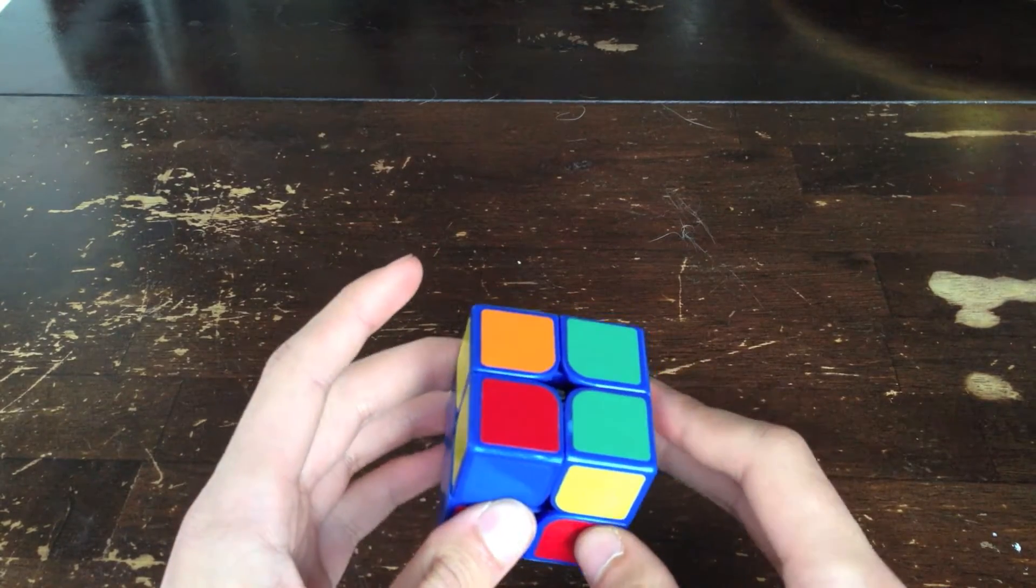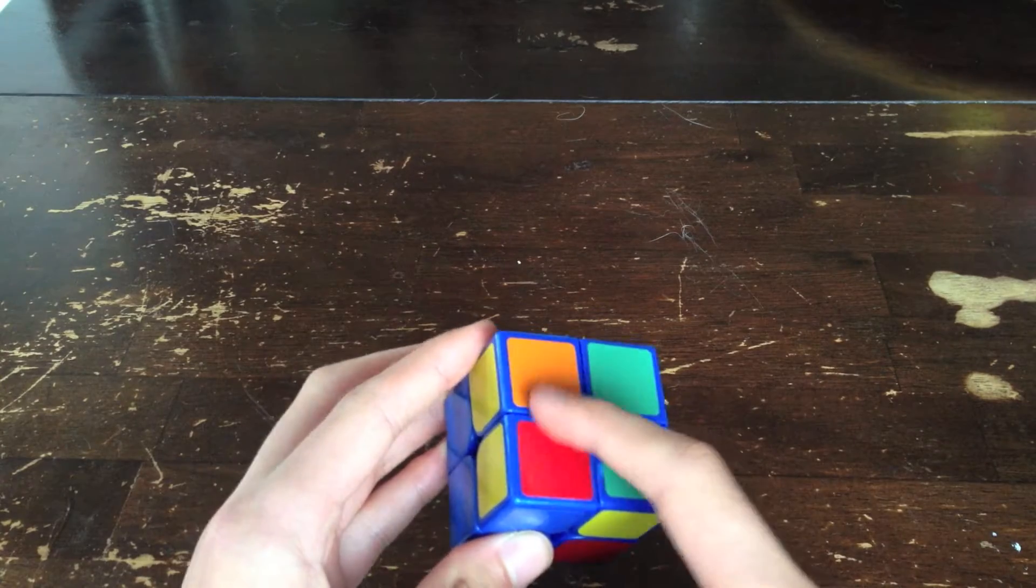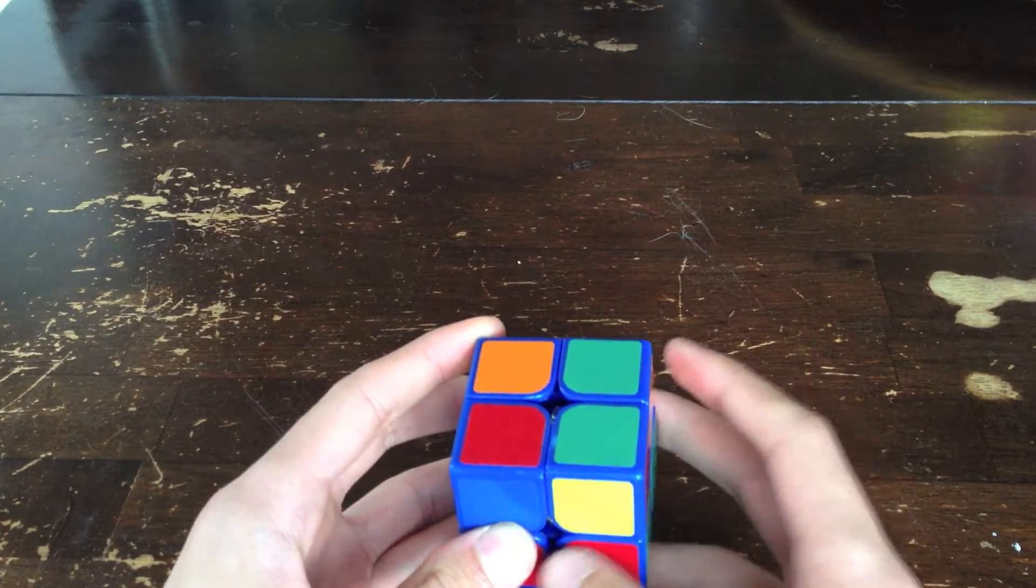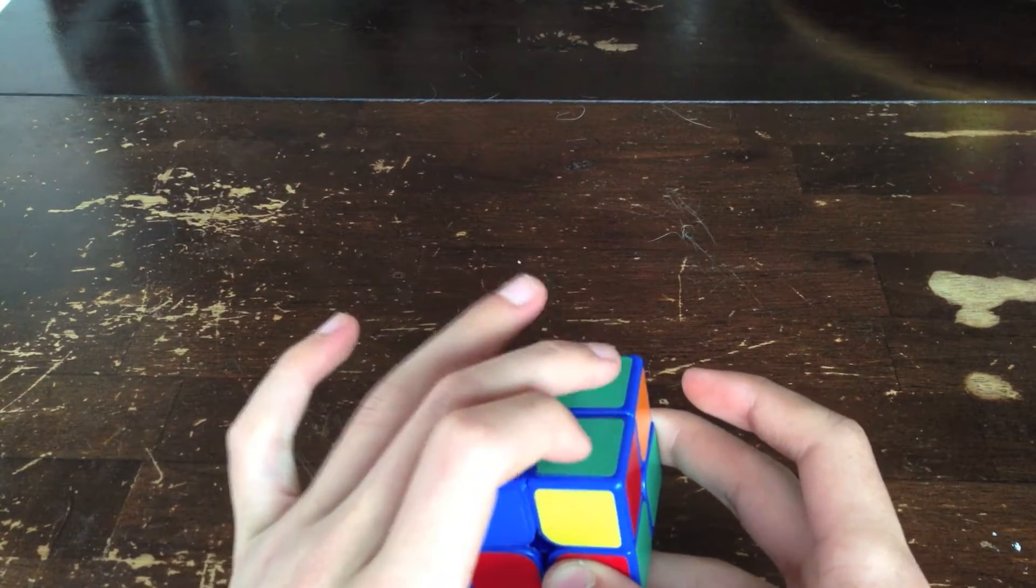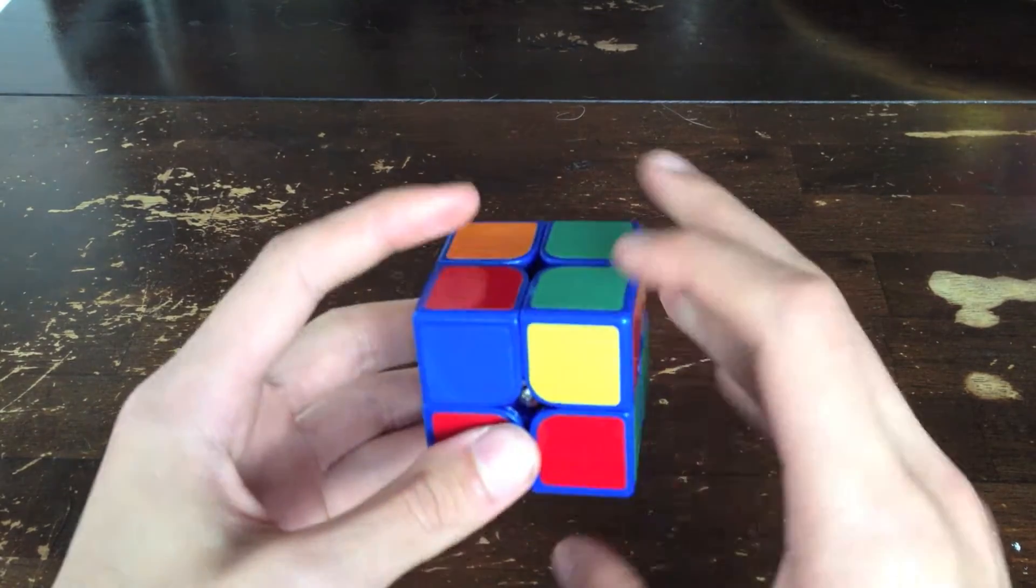How I recognize this first case is these two are opposites and there's a block right here. So these two are opposites and here's a block that I just do.